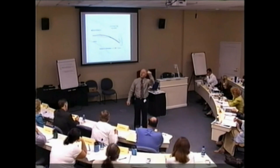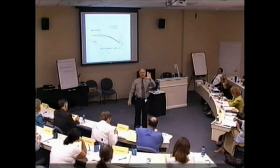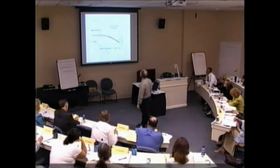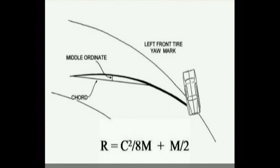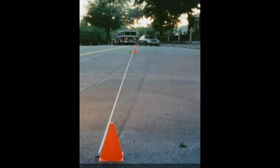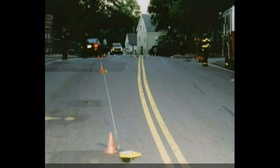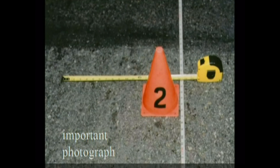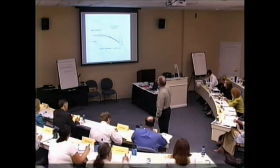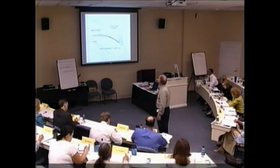We make the assumption that the yaw mark is circular — not a bad assumption — and then we ask what circle it would be a part of. We use a trigonometric equation called the radius equation, where you take a measurement from one part of the mark to another, as early as you can in the mark. This is called the chord. A line drawn across a circle is called a chord. At the middle of the chord you measure out to the mark itself — that measurement is called the middle ordinate or mid-ordinate. It's a very basic geometry equation, like a ninth grade geometry assignment: if you have these two measurements, find the radius of the circle.